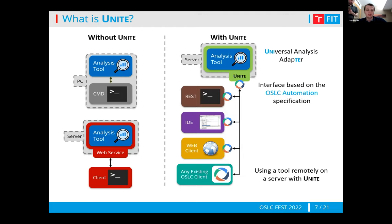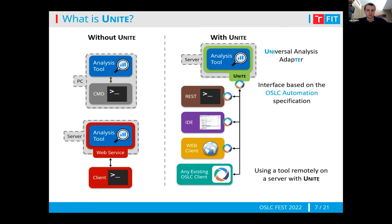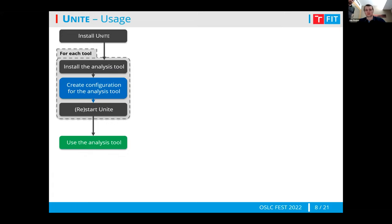Since it's an OSLC interface, this allows anyone who already has a client to very easily reuse it — just maybe switch the domain if they're using a different domain — and start using that client to interact with Unite. It also makes it easier to create new clients, because you can reuse components like the standardized communication. The domain which we are using is the OSLC automation specification.